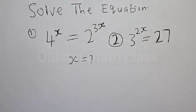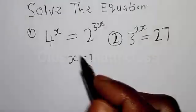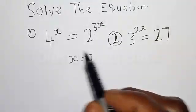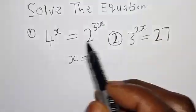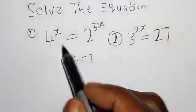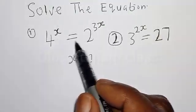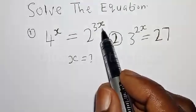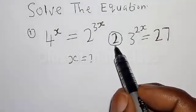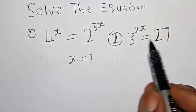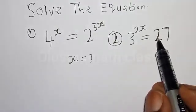Hi everyone, welcome to my class. In this class, we quickly want to find the value of s from the given exponential equations. The first equation is 4 raised to power s is equal to 2 raised to power 3s. The second one is 3 raised to power 2s is equal to 27.